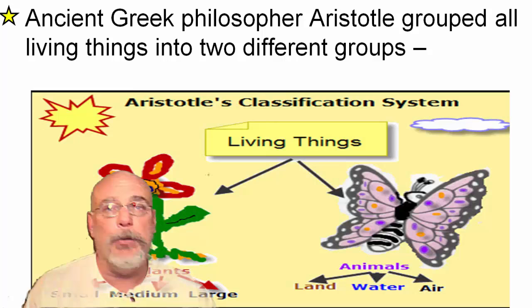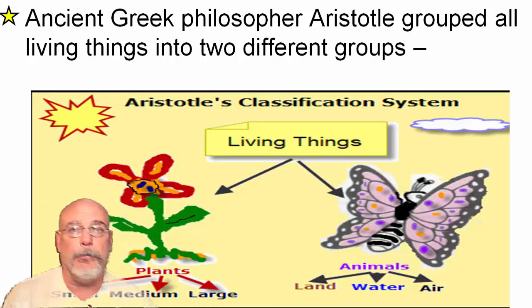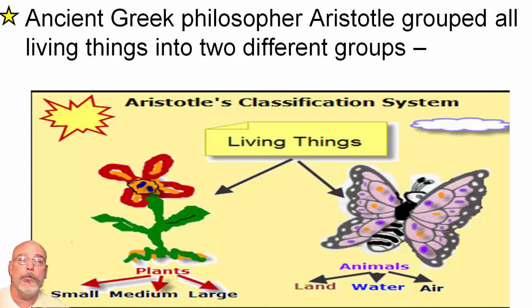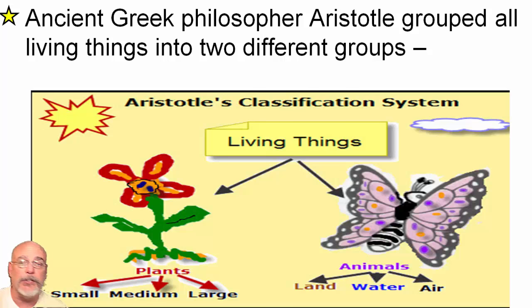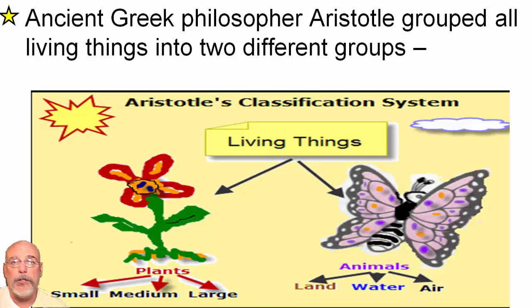One of the things Aristotle is famous for is being one of the first people to make an organization system for organisms. He grouped organisms into two groups of living things: plants and animals. In a lot of ways we still do this today. This was a pretty good way to organize things. He also went on to organize plants as useful and non-useful.